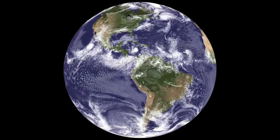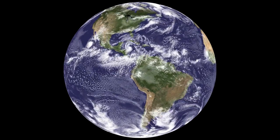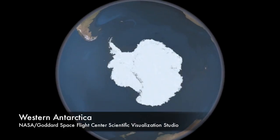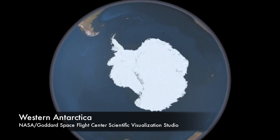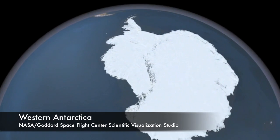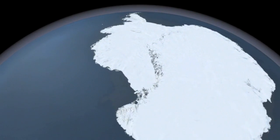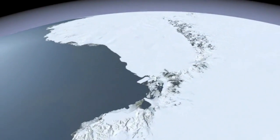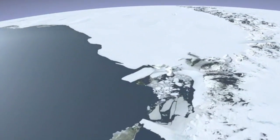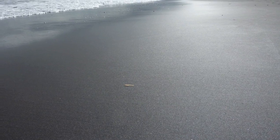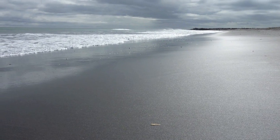The earth has undergone dramatic change over its geologic history. As the earth has cooled and warmed, ice fields have advanced and receded. During warming periods, ice melts and water expands, causing sea level rise.